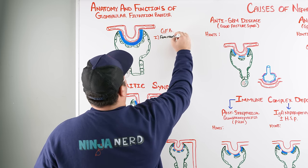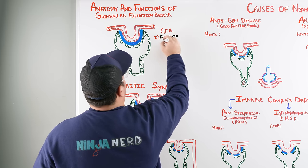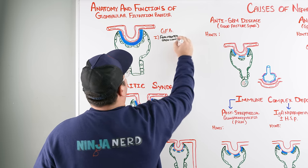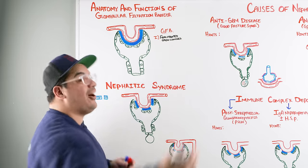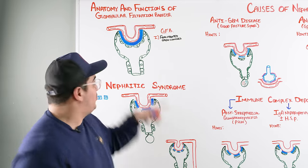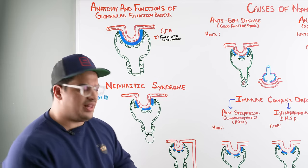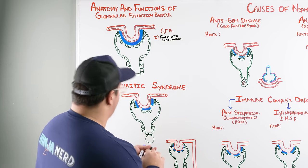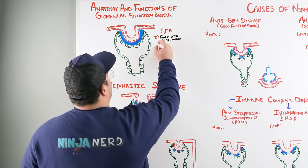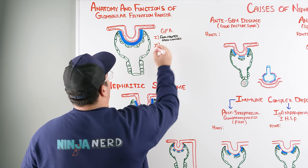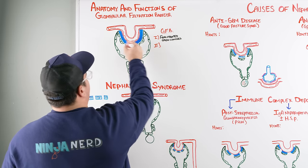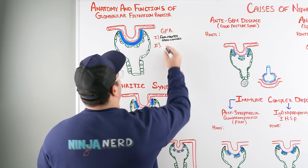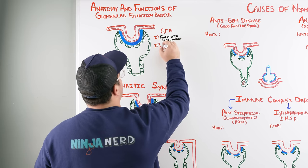The fenestrated capillaries control blood flow and prevent certain things within the blood from leaking into Bowman's space. They're especially good at blocking large proteins and red blood cells. The second component of the glomerulofiltration barrier is the glomerular basement membrane.